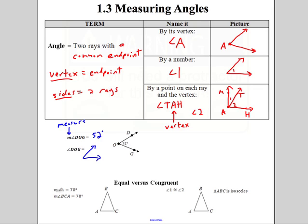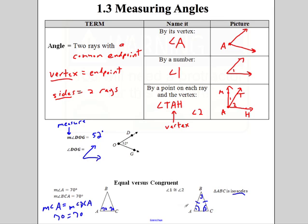Equal versus congruent: I can say the measure of angle A is 70 degrees, or the measure of angle BCA is 70 — so the measure of angle A equals the measure of angle BCA because 70 equals 70. Or we use the congruent sign — the equal sign with a little wavy line on top. For example, in an isosceles triangle with angles 1, 2, and 3, since two sides are equal, angles 1 and 2 are congruent. We mark congruent angles with a tick mark. Angle 1 is congruent to angle 2.